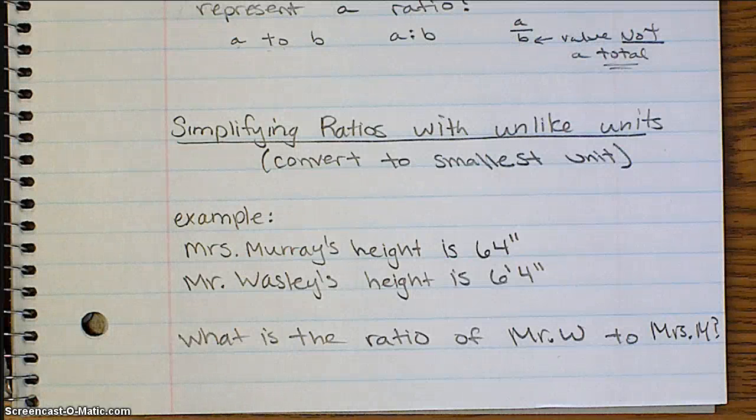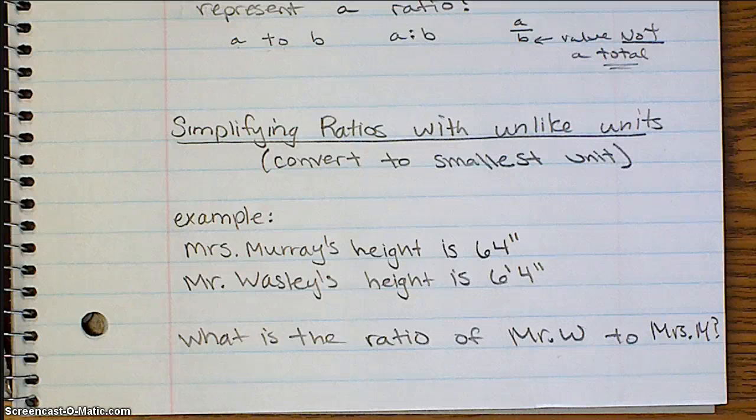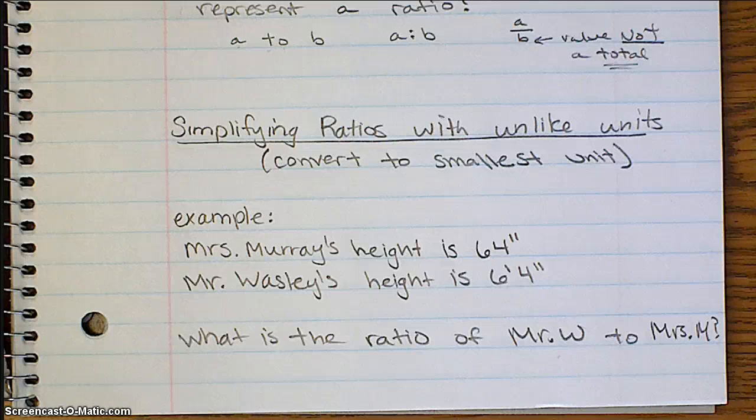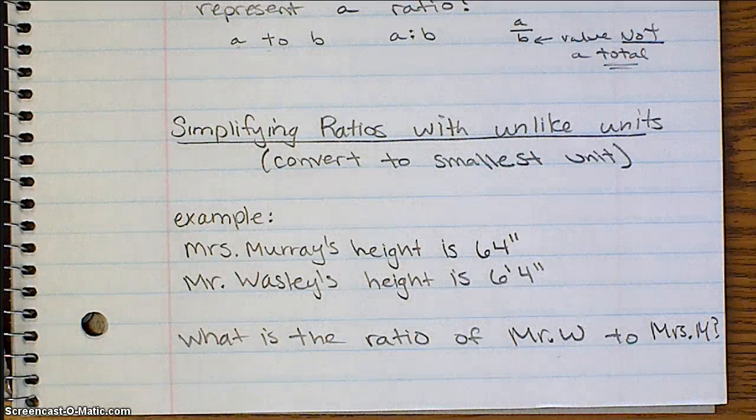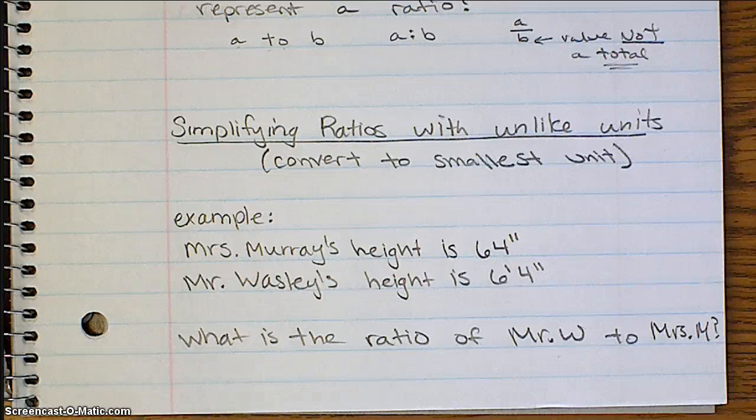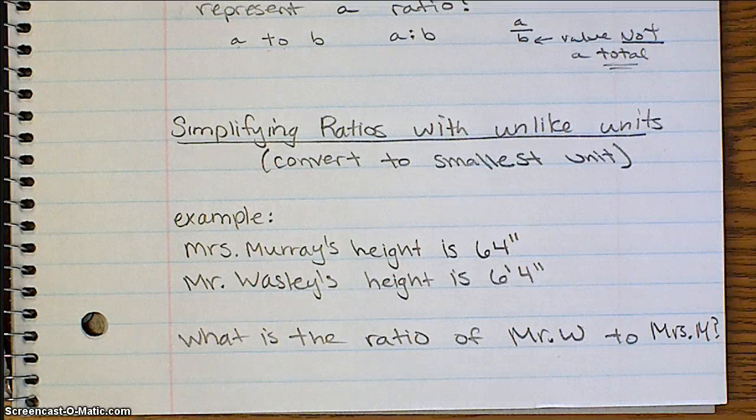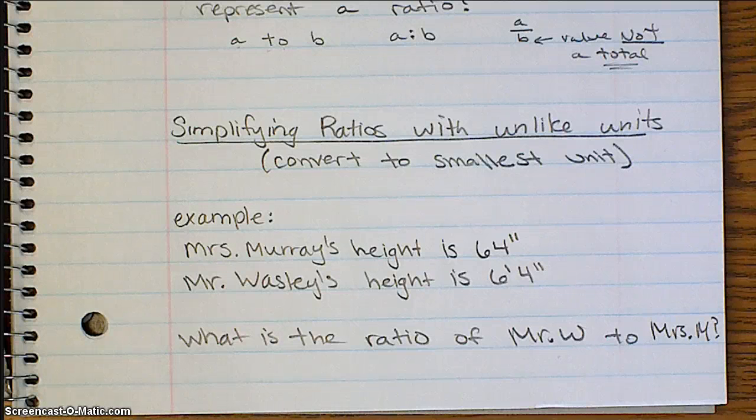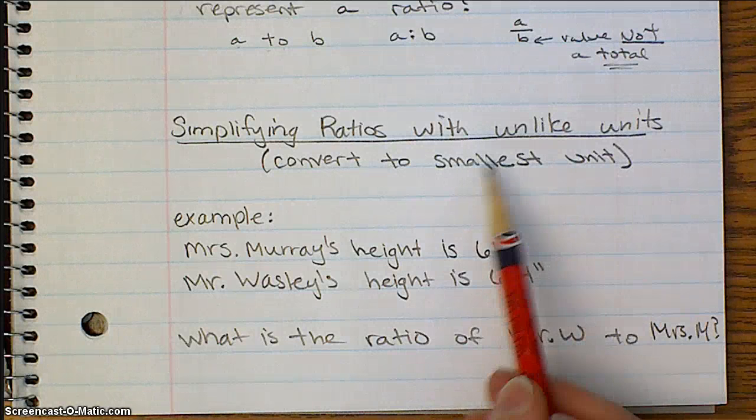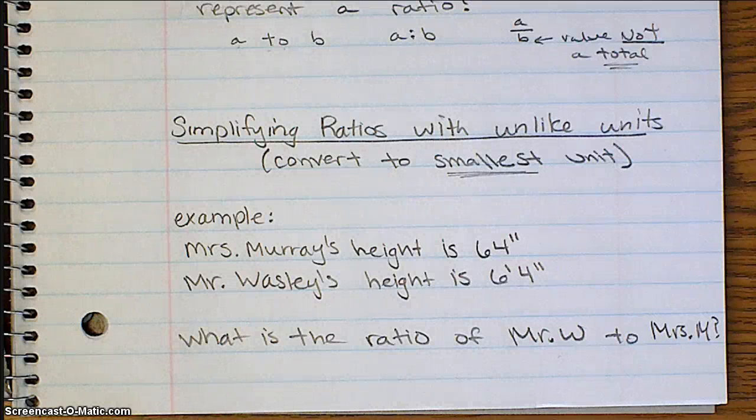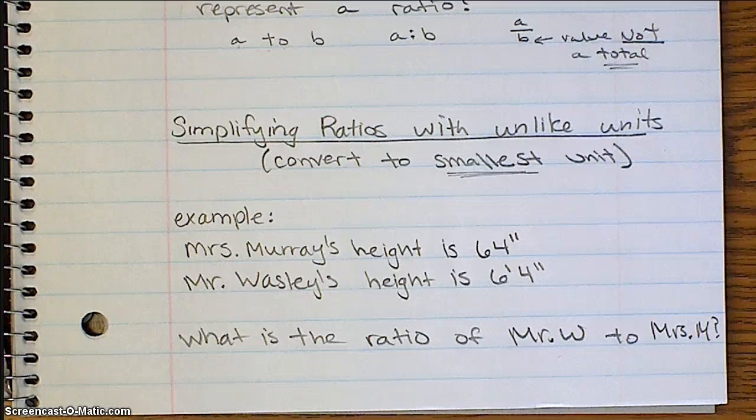Okay, simplifying ratios with unlike units. Sometimes, you're going to have to write a ratio where the units are not the same. So, for example, the ratios that we just wrote, boys to girls, girls to boys, both of those were comparing students, the same units. Let's say you wanted to compare inches to feet, or centimeters to meters, or miles to feet. You can't really do that until the units are the same. So, the way that you get the units to be the same is by converting your units to the smaller unit. So, for example, feet and inches, you would want to put both of them into inches, because inches is the smaller unit.